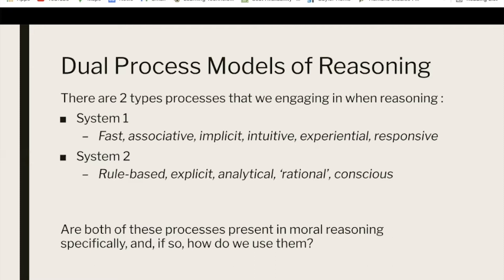The question I want to address is: are both of these processes present in moral reasoning specifically, and if they are, how do we use them? Within the last two decades, moral philosophers have begun to explore applications of the dual process model to moral reasoning. More interestingly, some have attempted to make connections between neuroscientific facts about reasoning and normative claims about what ethical theories we should prefer. The popularity and controversy surrounding these neuroscientific studies is what led Selim Berker to jokingly title this time in ethics the age of the fMRI.